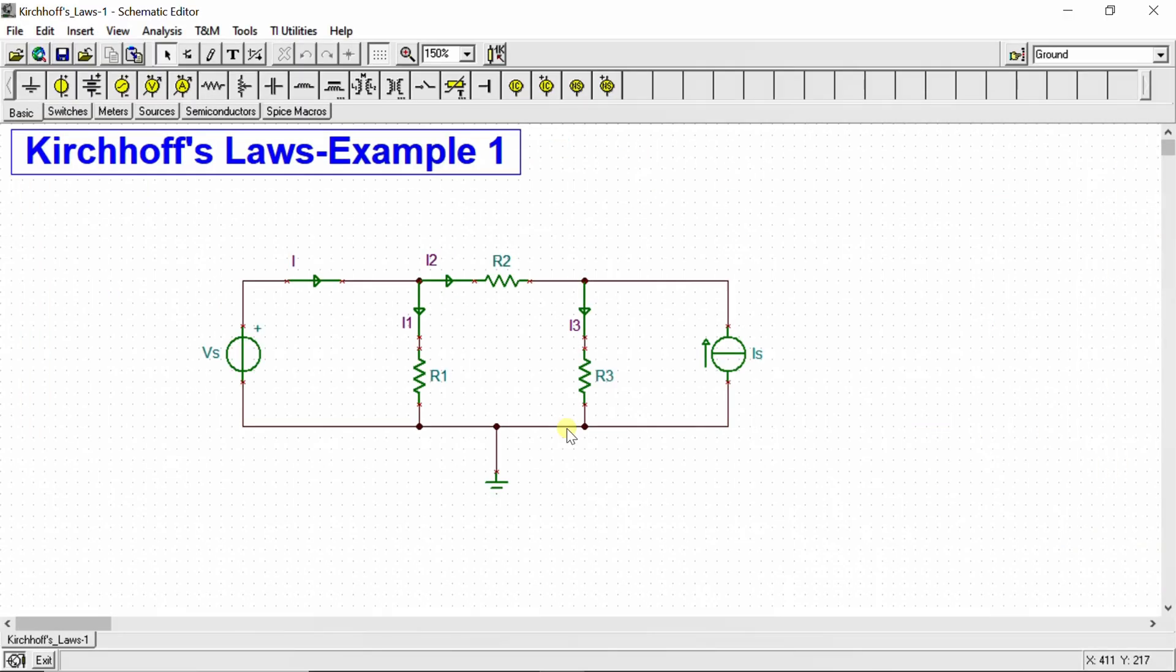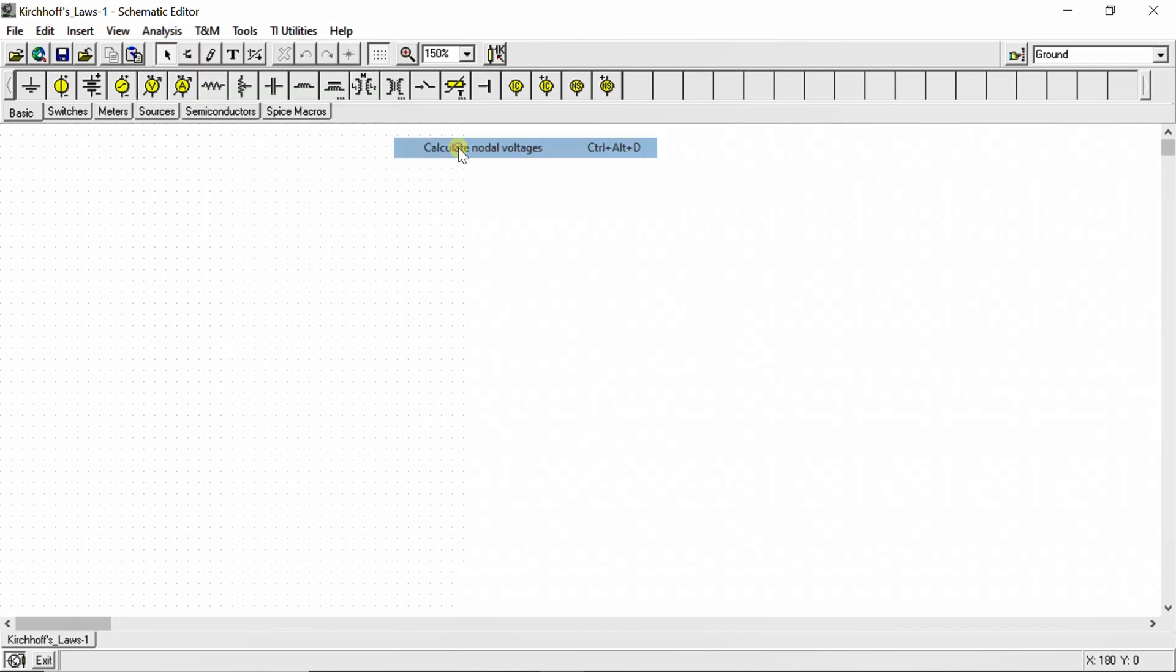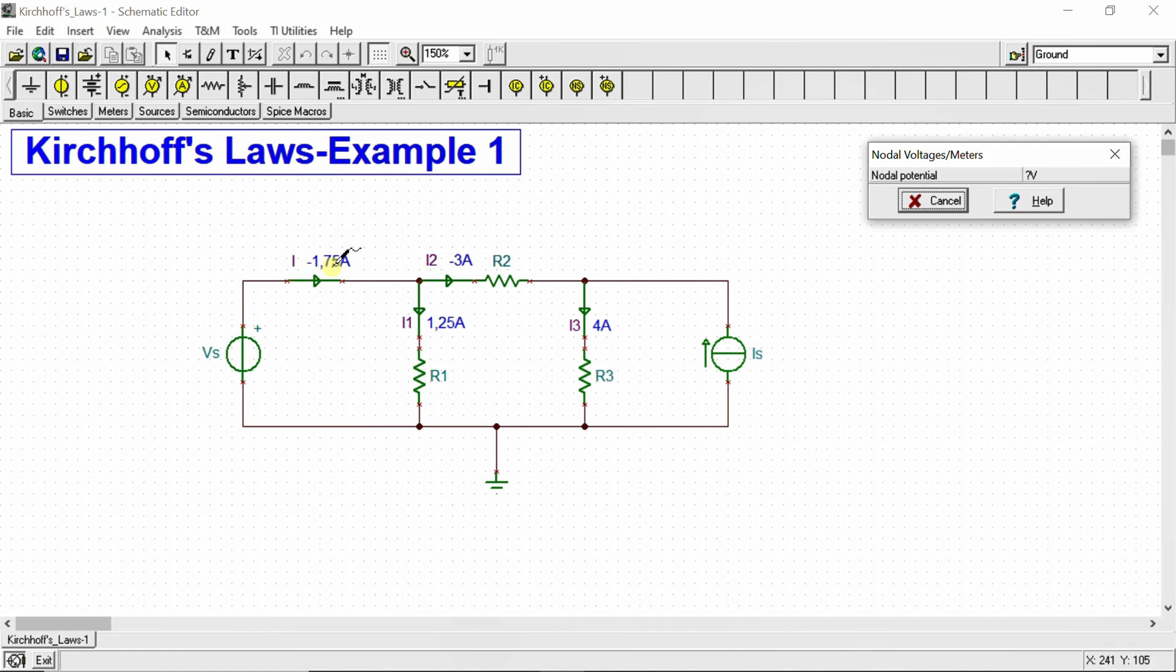Here the circuit is done with SPICE simulation software. Well, let's go to analyze, we go to DC analyze, and we go to calculate nodal voltage. We can see here that I is negative 1.75 amps, I1 is 1.25 amps, I2 is negative 3 amps, and I3 is 4 amps. The value of the current is exactly the same we have done by theory calculation.